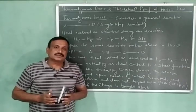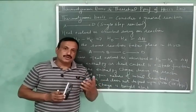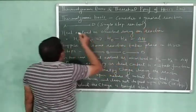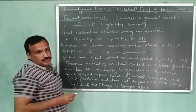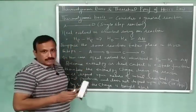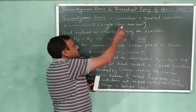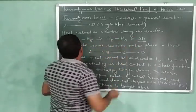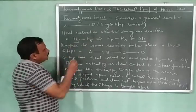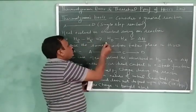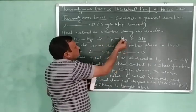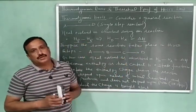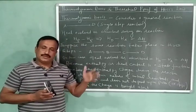Now we will discuss the thermodynamic explanation of this law. Let us consider a general reaction where A is being converted into D — a single step reaction. The total heat evolved or absorbed during this reaction will be equal to the enthalpy of products minus the enthalpy of reactants, that is H_D minus H_A, and this equals delta H.